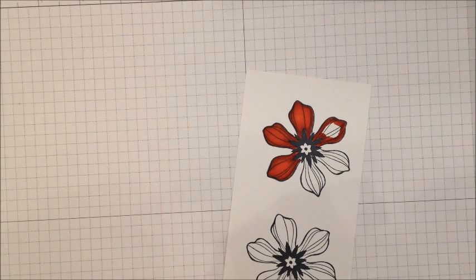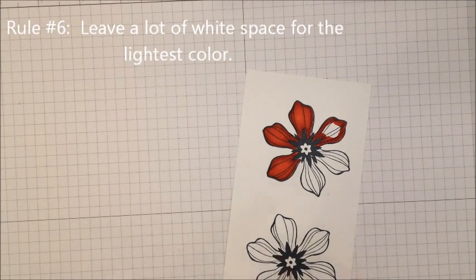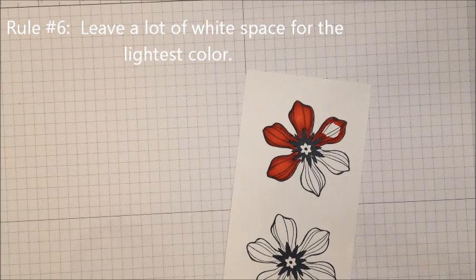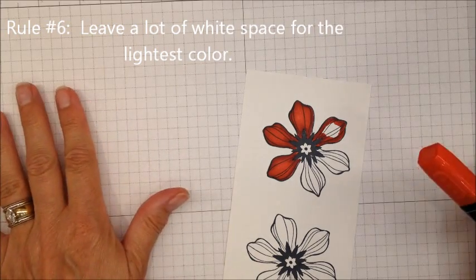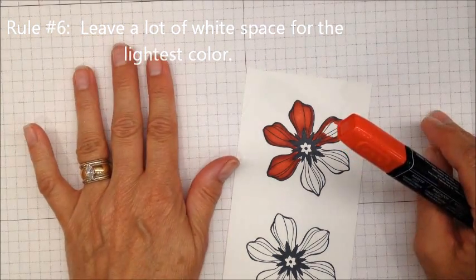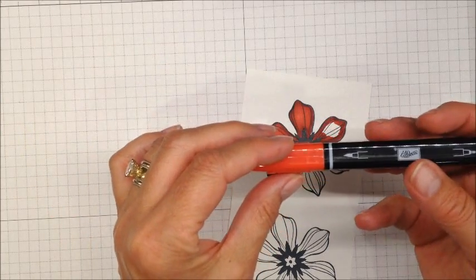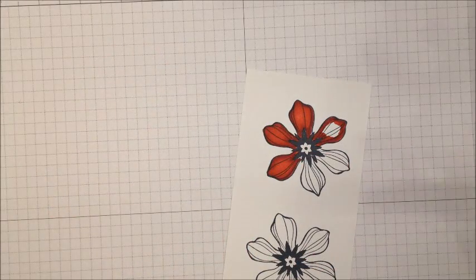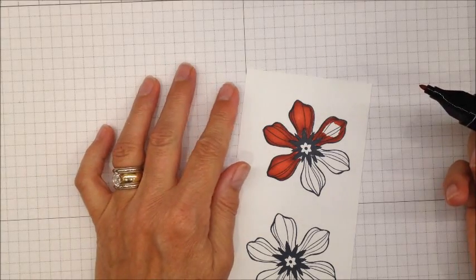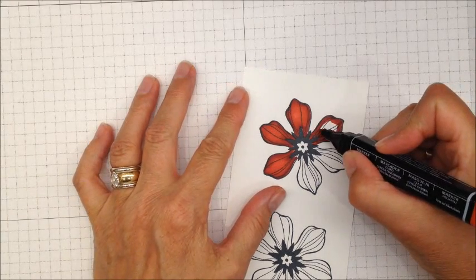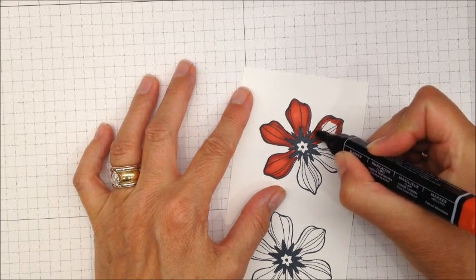Rule number six is leave a lot of white space. See all that white space? Well, when I ignore the rule about looking for your light source, I make up for it by having a lot of white space available for the lightest color. That means that we'll have a nice dark to light shade.